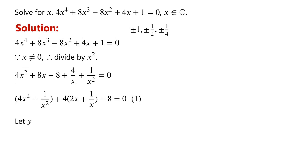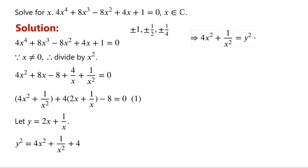Now, we let y equal 2x plus 1 over x. Then y squared equals 4x squared plus 1 over x squared plus 4. So, 4x squared plus 1 over x squared equals y squared minus 4.